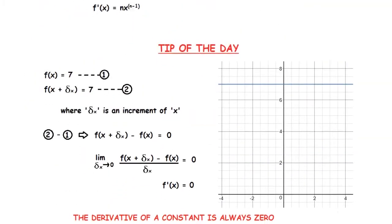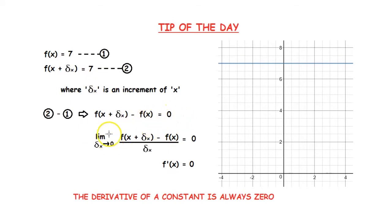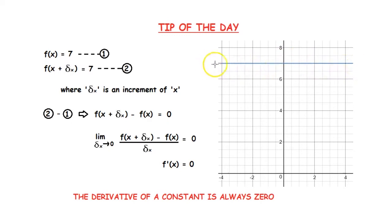Now for the tip of the day. I had a bonus question in my previous video — find the derivative of f of x equals 7. So f of x plus delta x will also be equal to 7. When we compute f of x plus delta x minus f of x, we get 0. So when we apply the limit, the final derivative of f of x will be equal to 0. Remember, the derivative of a constant is always 0. If you look at this diagram, you can see that the gradient of this line is 0 since it is a constant and parallel to the x axis.